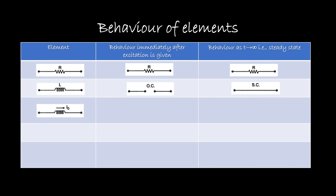Now, if the inductor is having some initial current I₀, then how will the behavior change? Simply, it will carry the same initial current immediately after the excitation. Under steady state, it will behave like a short circuit in parallel with its initial current. These things are very important in this analysis.